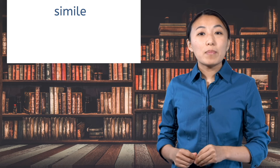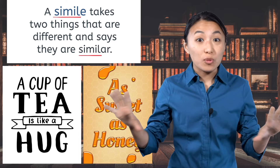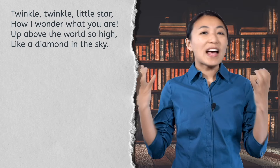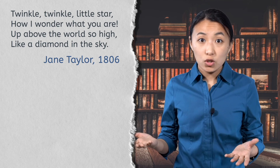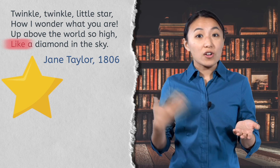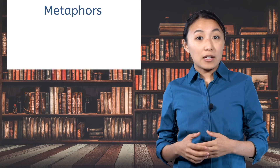Next up, the simile. A poet writes a simile when they compare two things that are actually different and say they are similar. Similes use the words 'like' or 'as.' Take a look at this poem and see if you can find a simile. 'Twinkle, twinkle, little star, how I wonder what you are. Up above the world so high, like a diamond in the sky.' It was originally a poem written by Jane Taylor in 1806. The word 'like' helps identify the simile — the poet is comparing stars and diamonds, saying they are similar. It must be really shiny and bright if it's like a diamond.